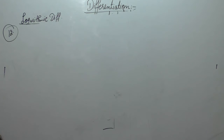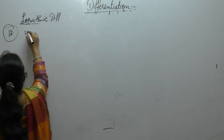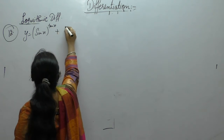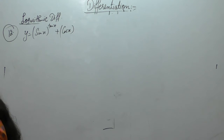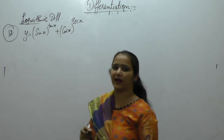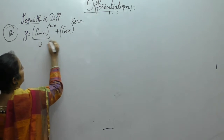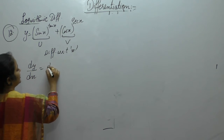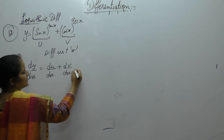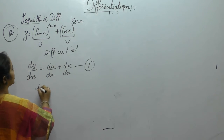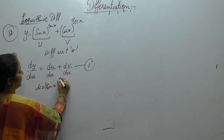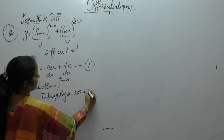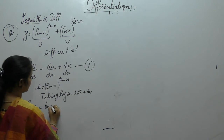Next one is y equals sin(x)^tan(x) + cos(x)^sec(x), find dy/dx. Let this function as u and this as v. If we differentiate with respect to x, then dy/dx equals du/dx plus dv/dx. Let this equation as 1. Now what is the function u? u = sin(x)^tan(x). Again same procedure, taking log on both sides. What will we get? Log(u) = tan(x) · log(sin x).